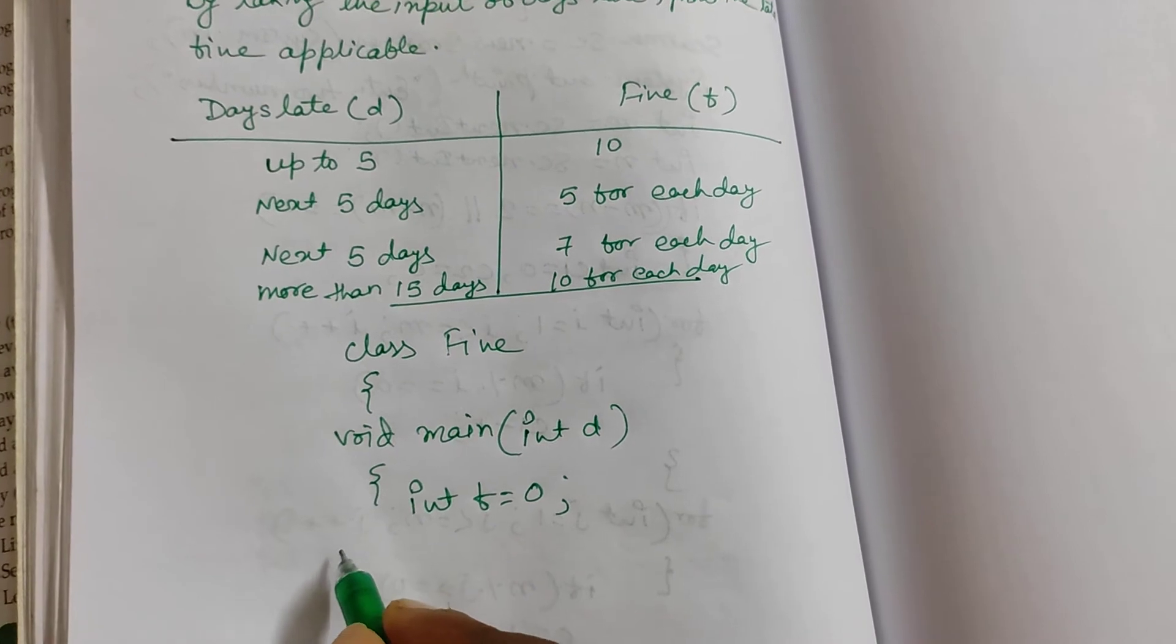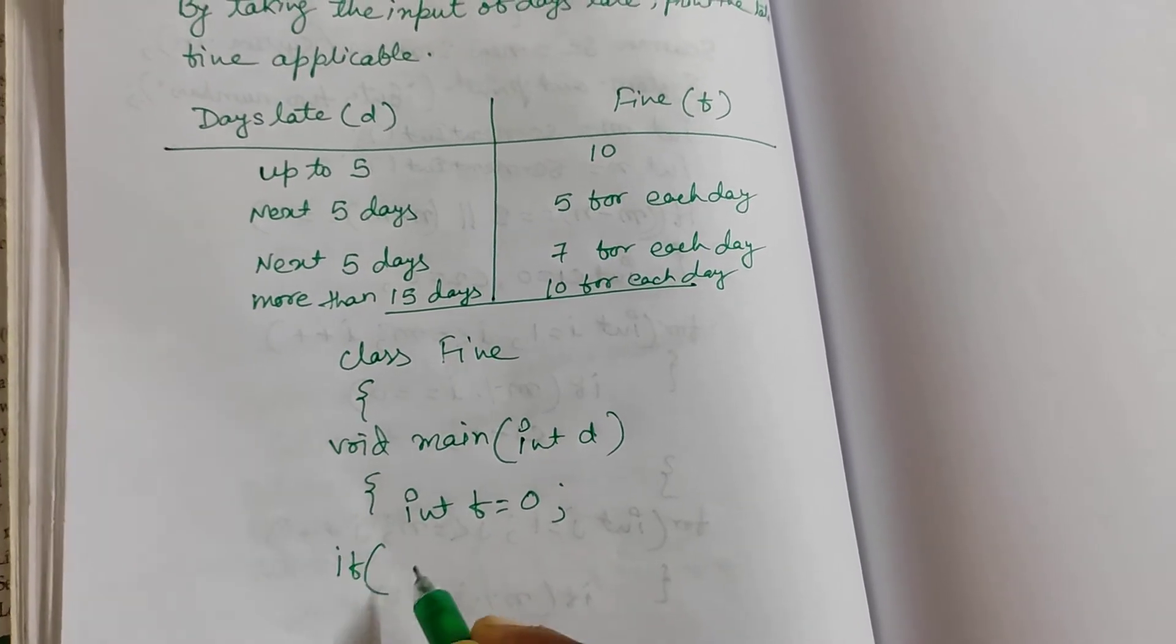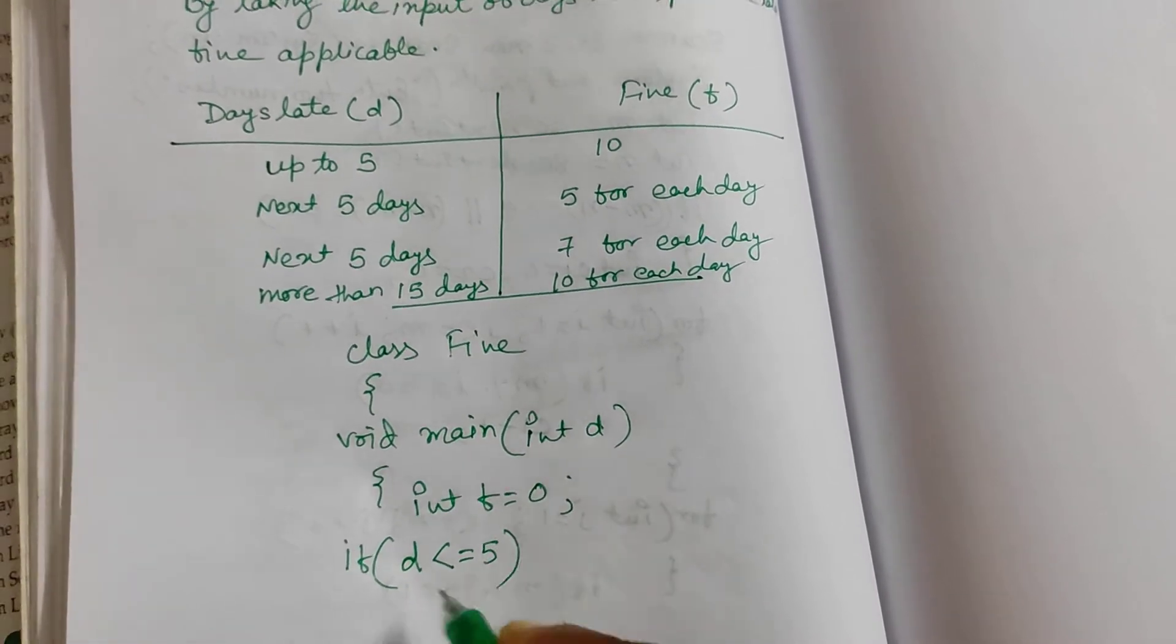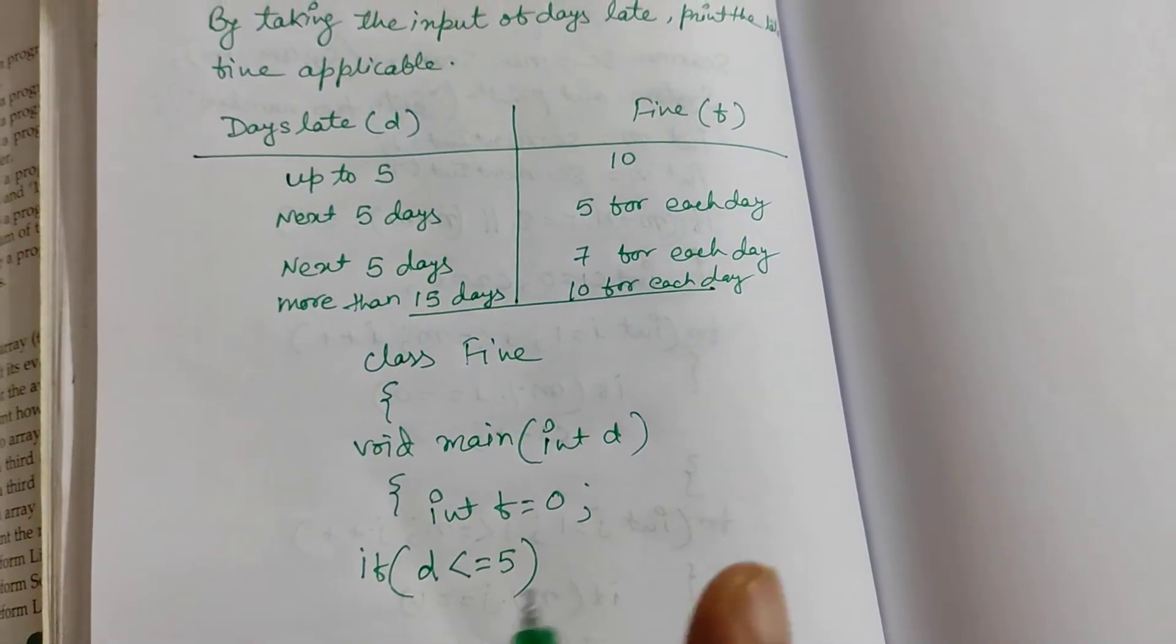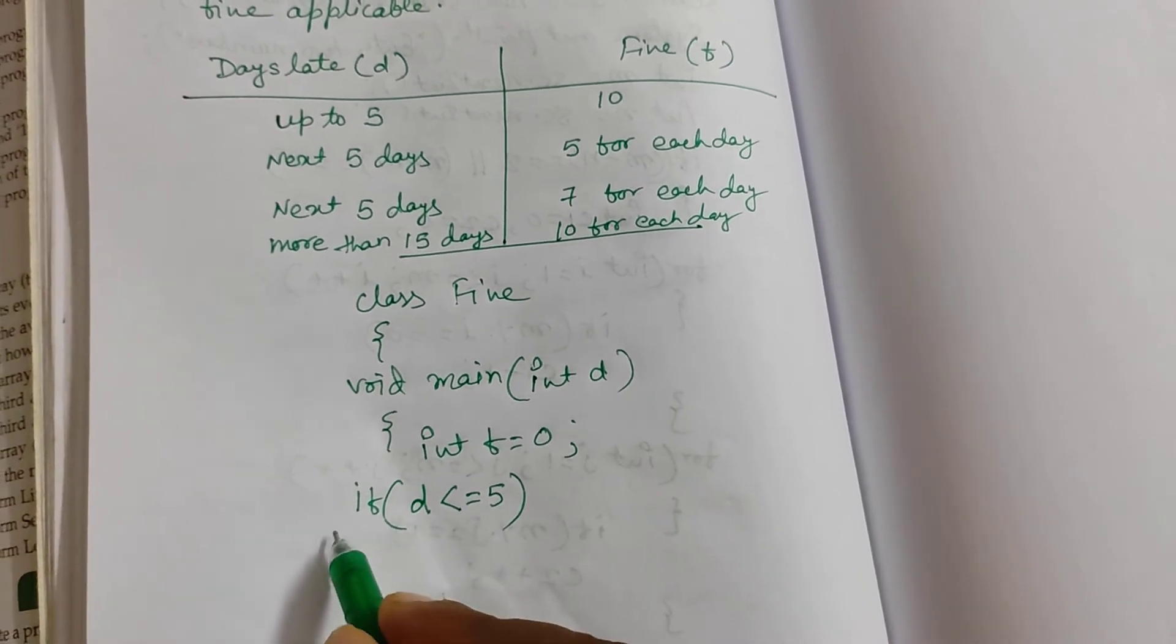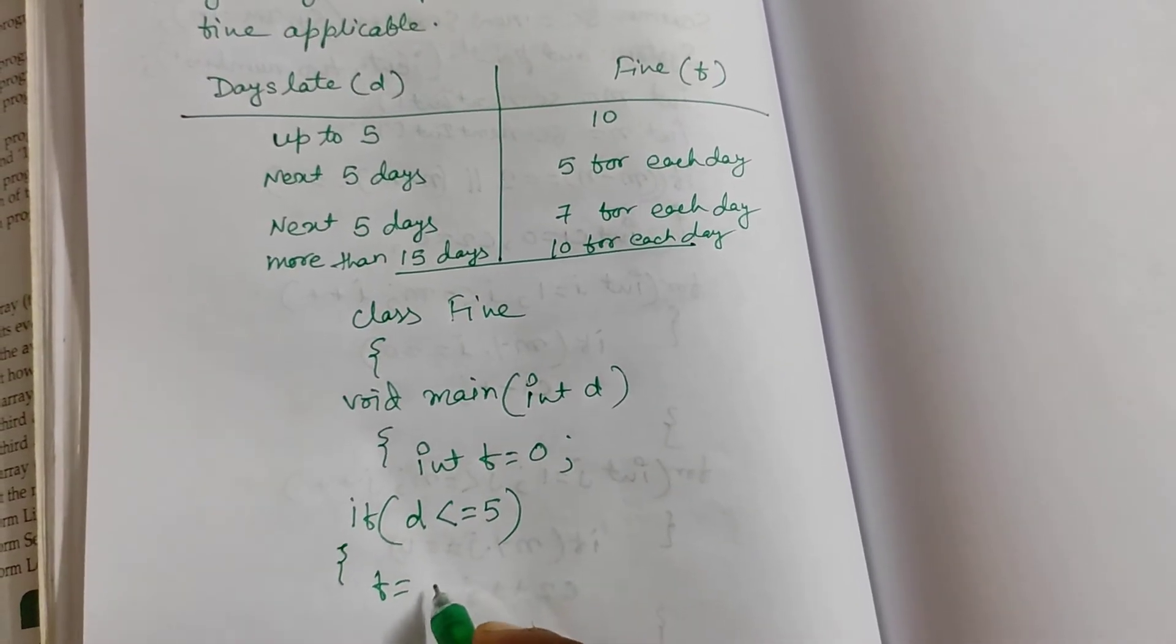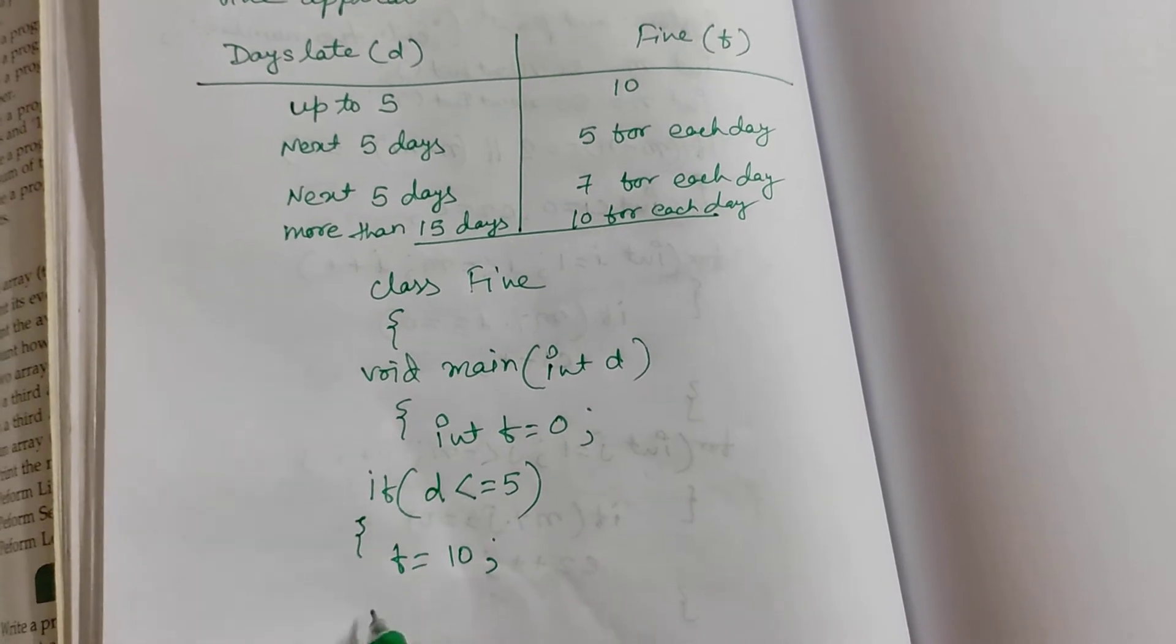Now what we will do, we will check if condition. If our d is less than equal to 5, first up to 5 days, that is 1 to 5 days, less than equal to 5. So what we will write, fine, f equals to 10 rupees, so 10 directly we will write.